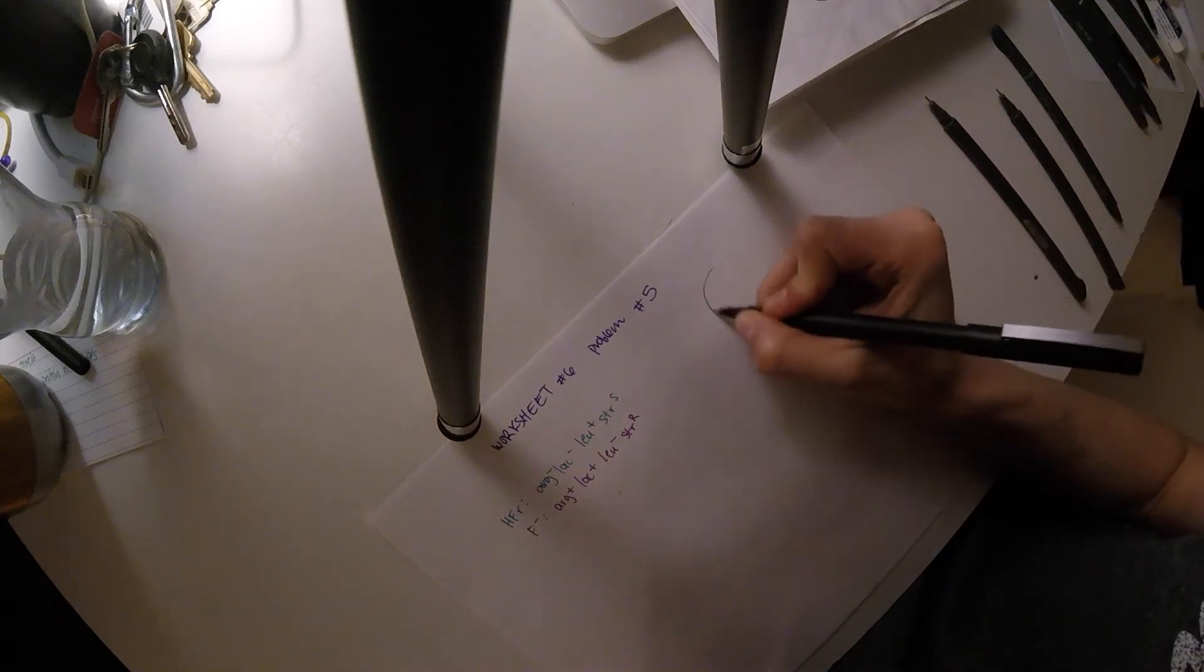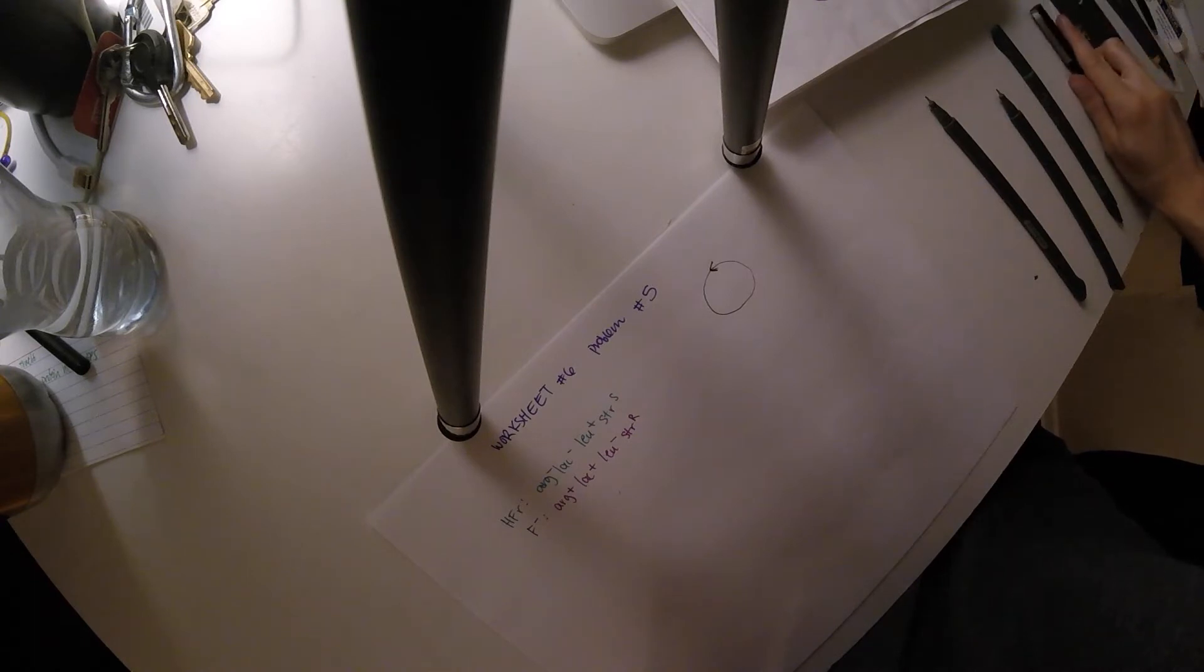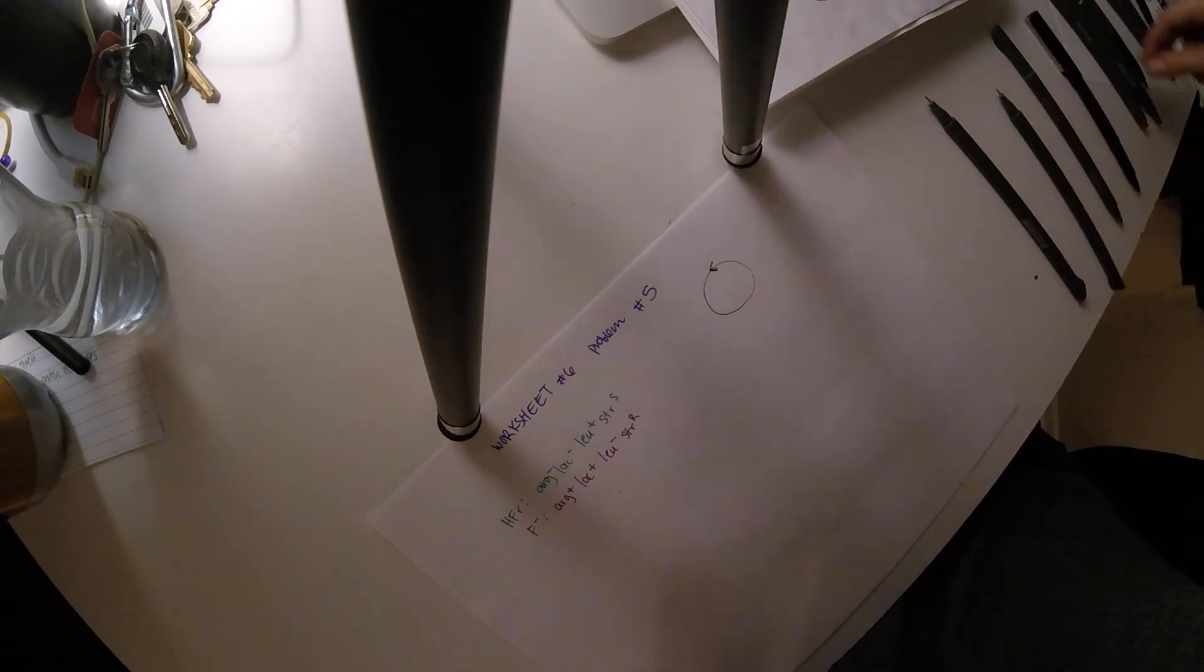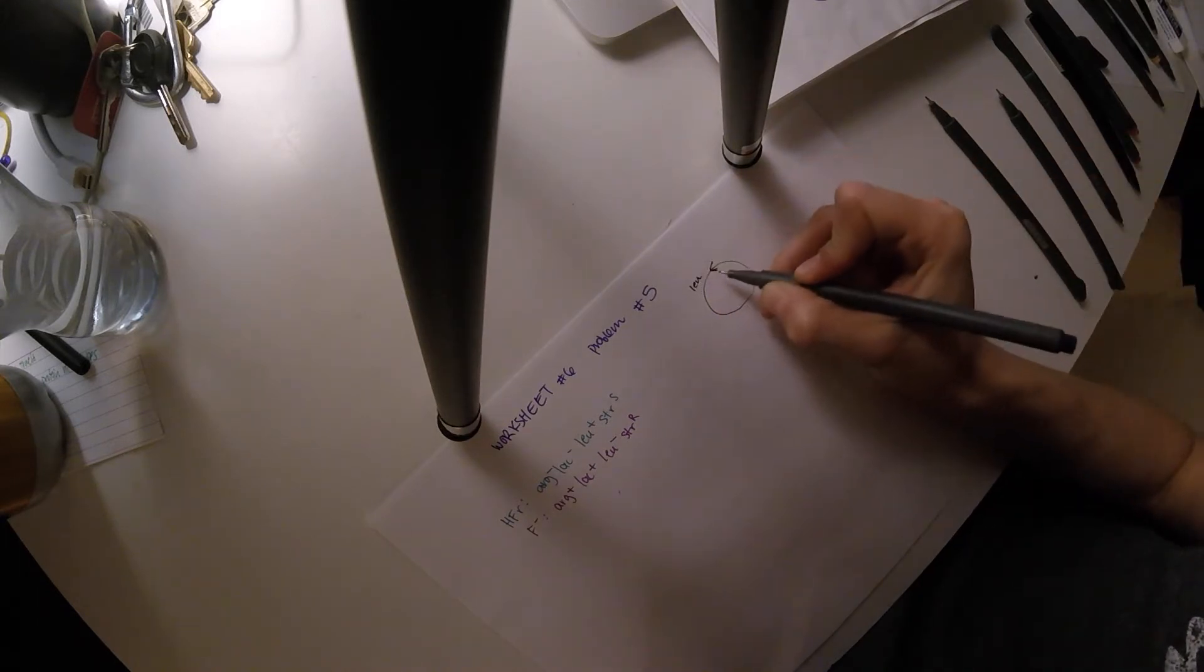If we draw what our circle would look like, if we put that up there, it told us that Lou is the last one, so we're going to put Lou close to this origin but in the wrong direction.